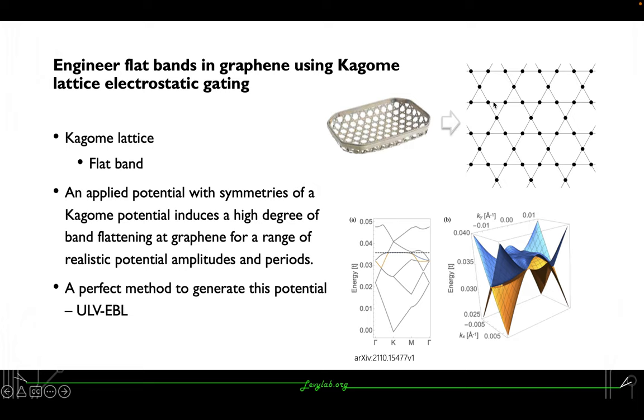It shows this Kagome lattice also has a flat band in which the electrons are spatially localized in the hexagonal ring.